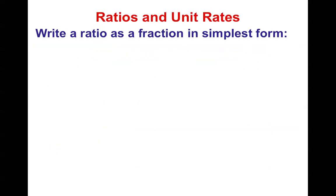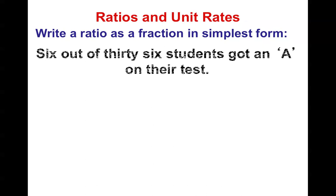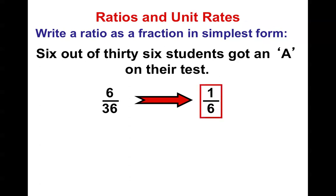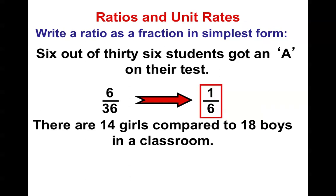All right. So, let's write the ratios as fractions in simplest form. Six out of 36 students got an A on their test. Well, that means that I got six over 36. And of course, I have to simplify it by dividing by six and dividing by six. And I get one out of every six students got an A. There are 14 girls compared to 18 boys in a classroom. That would mean that we have 14 to 18. Divide by two and divide by two. And we have a ratio of seven girls to every nine boys.